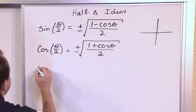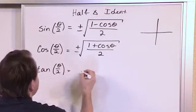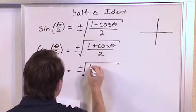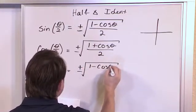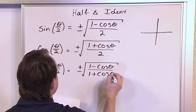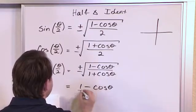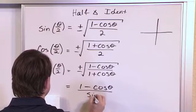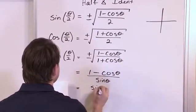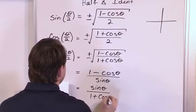And then finally we have tangent of theta over two. We have a couple of different choices here. The first is plus or minus the square root of one minus cosine theta over one plus cosine theta. We also have a choice of one minus cosine theta over sine of theta. And we also have a final choice of sine of theta over one plus cosine of theta.